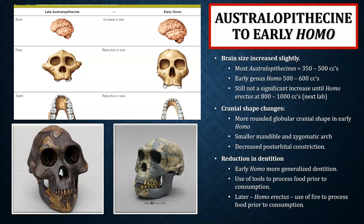We're also going to see some cranial shape changes. For genus Homo we have a much more rounded, globular cranial shape. The mandible is getting smaller, the zygomatic arch is getting smaller, and we also see a decrease or decline in post-orbital constriction, which we'll talk about more on the next slide. Dentition is also reducing, especially the posterior dentition is getting smaller.